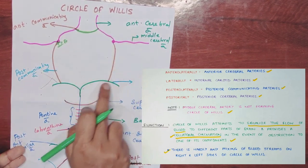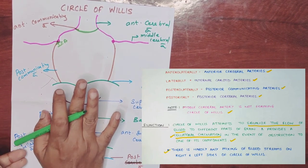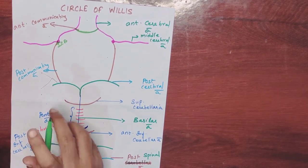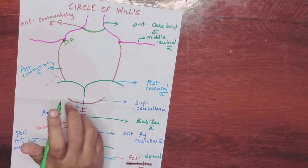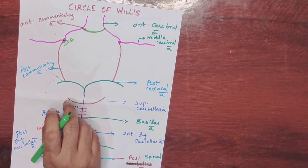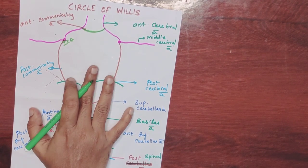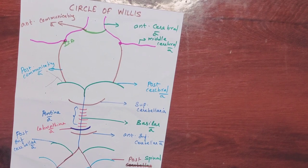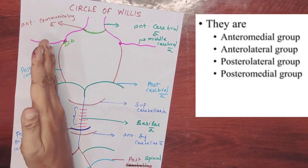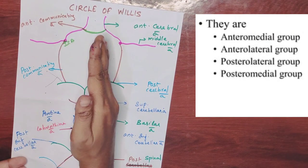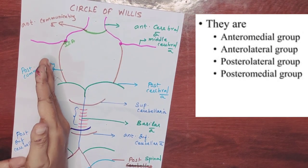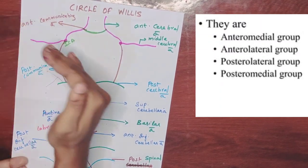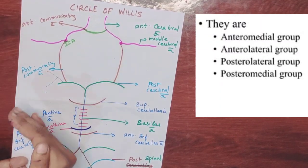These are the boundaries of the Circle of Willis. From the circle, four groups of arteries emerge: anterior medial, posterior medial, anterior lateral, and posterior lateral.